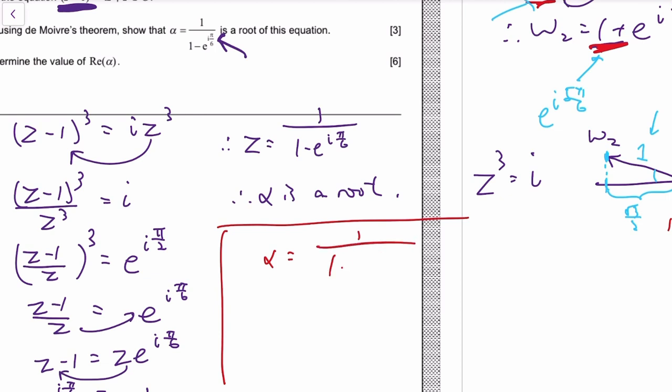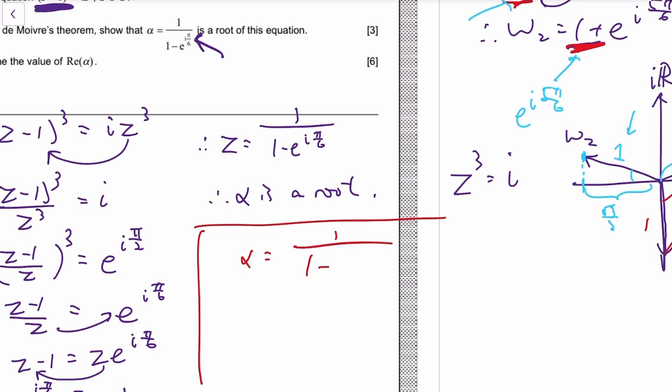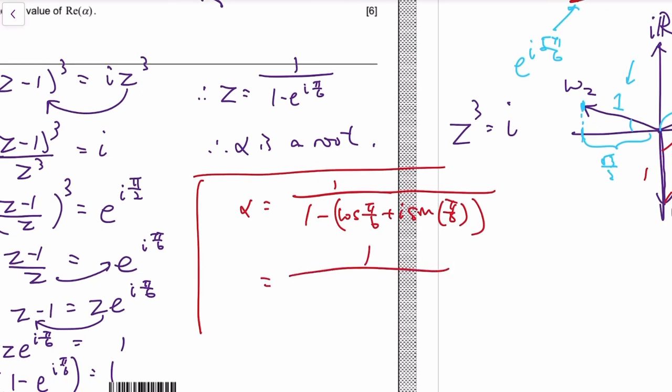The question is what is the value of the real part of alpha? We'll probably find a conjugate of this. One minus e to the i theta is cosine the argument plus i sine the argument. So it's like one over one minus cosine pi over 6. Well, we actually know what cosine pi over 6 is—root 3 over 2, minus i sine pi over 6, that's like a half.